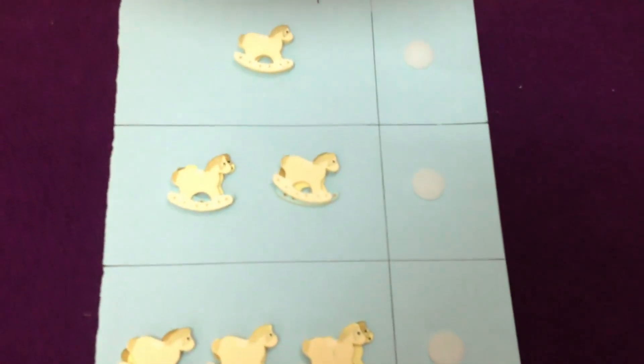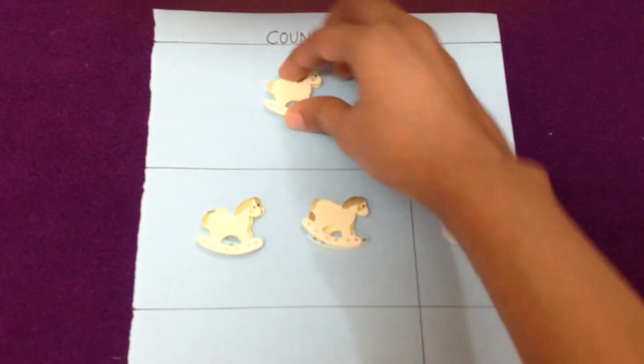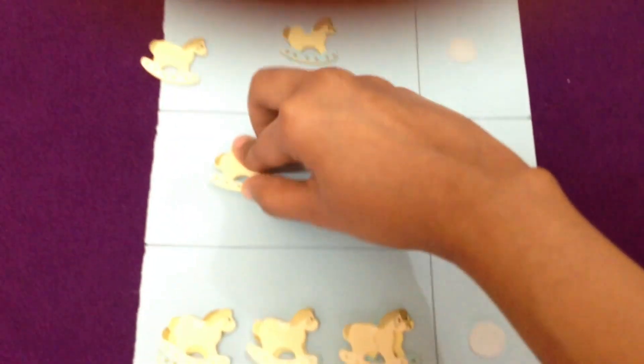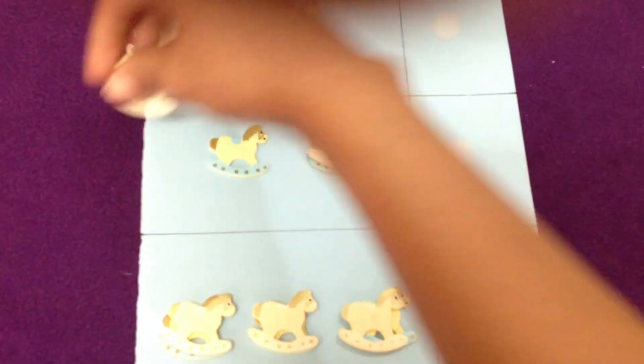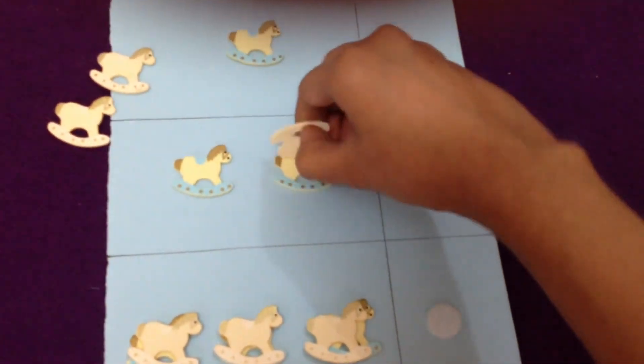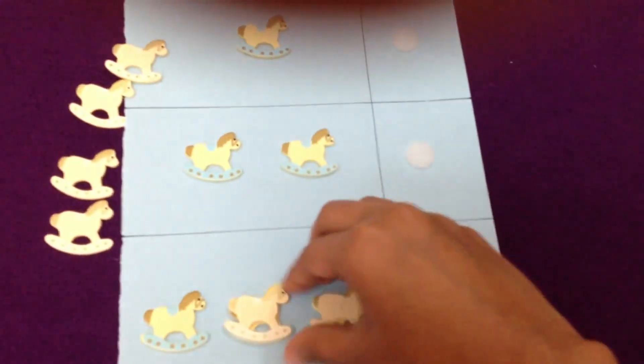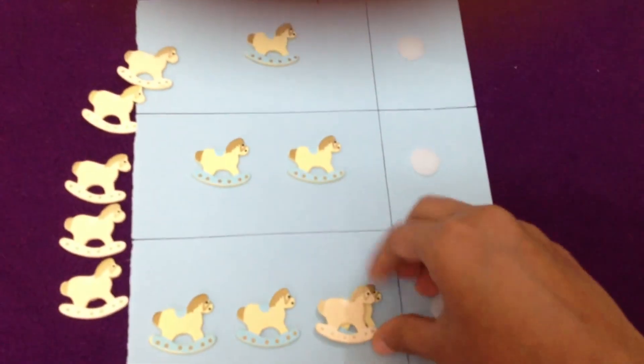Then I have this one. You can see these are wooden embellishments—these are horses. You can use whatever objects you want.